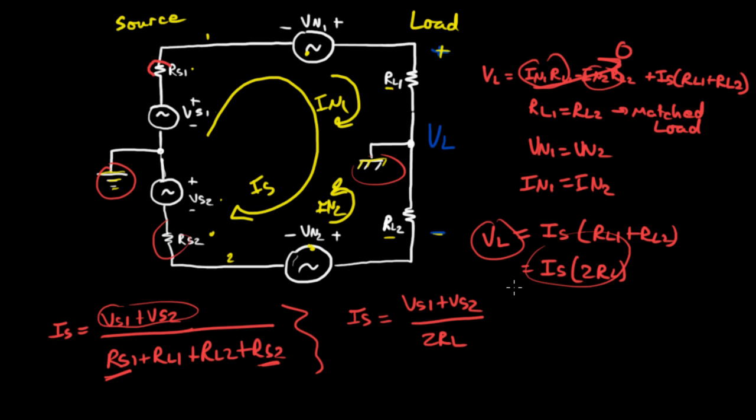So in a differential system, we want this impedance to be as low as possible, we want this impedance to be as high as possible, and we want the lines in between the two to be matched. Those are the three key things of a differential signaling system.